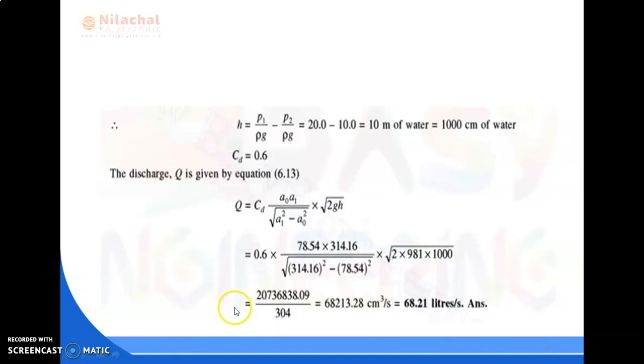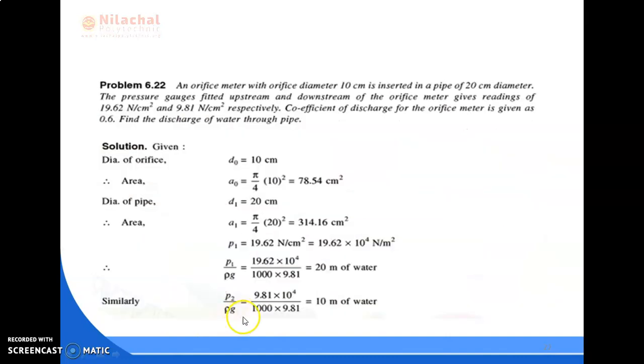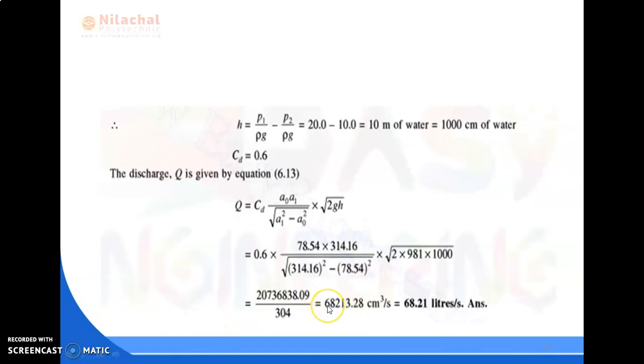Similarly, P₂/ρg is 10 meter of water. We know H = P₁/ρg - P₂/ρg, so this is 10 meter of water or 1000 cm of water. Cd is given as 0.6.